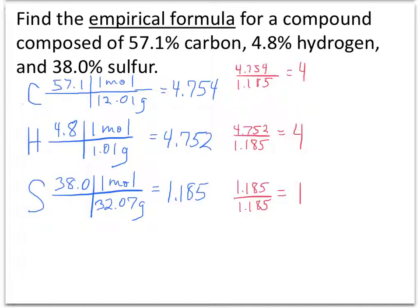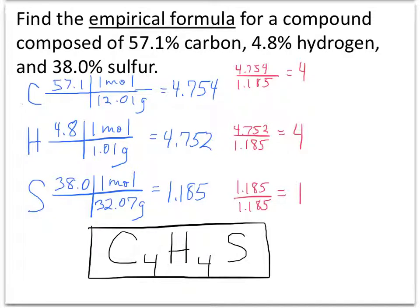The answers we get will be whole number 4 for carbon, whole number 4 for hydrogen, and 1 for sulfur. This establishes our ratio for our empirical formula, which will look like this: C4H4S. That's how we find the empirical formula from percentages, or percent composition.